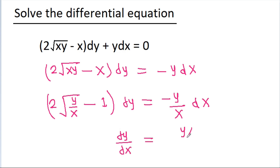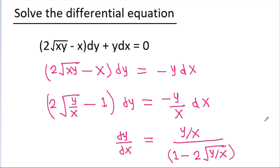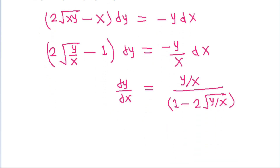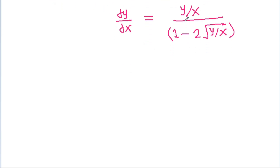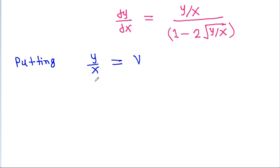Now we can get dy/dx is equal to (y/x) divided by (1 minus 2√(y/x)). Now if we take y/x equal to some v, putting y/x equal to v.